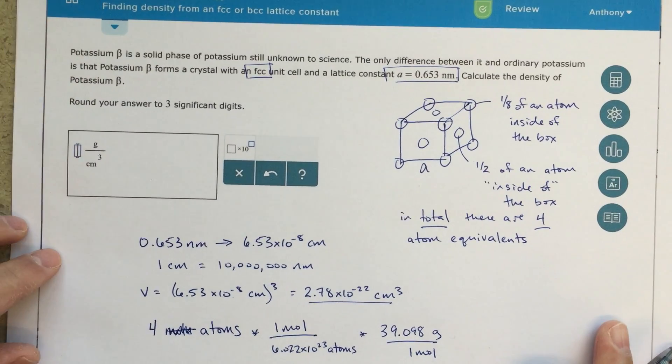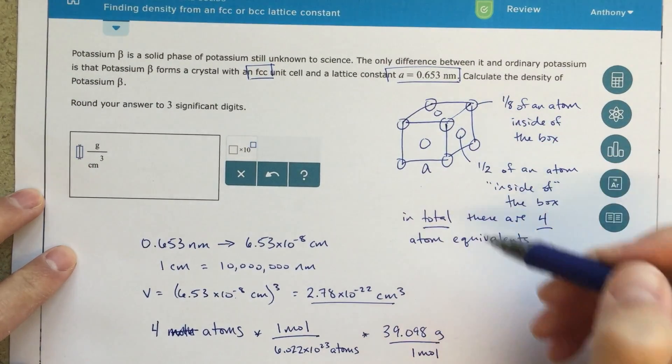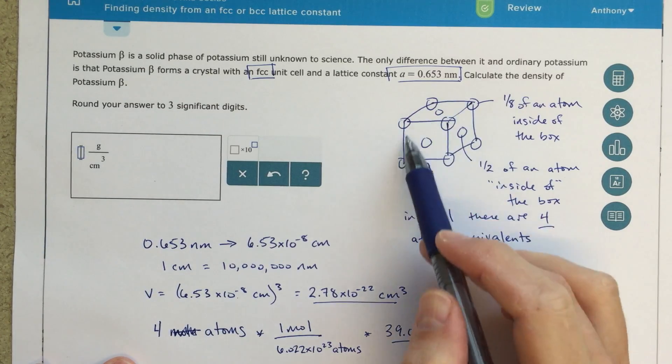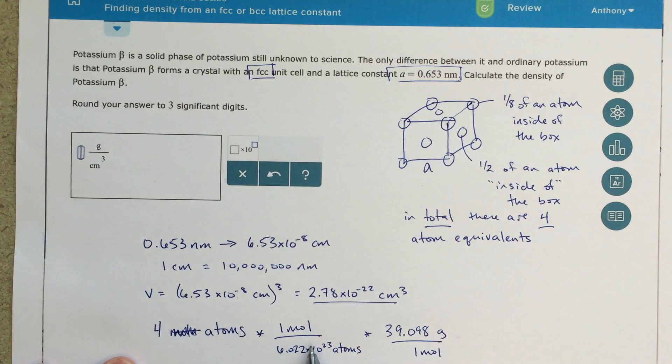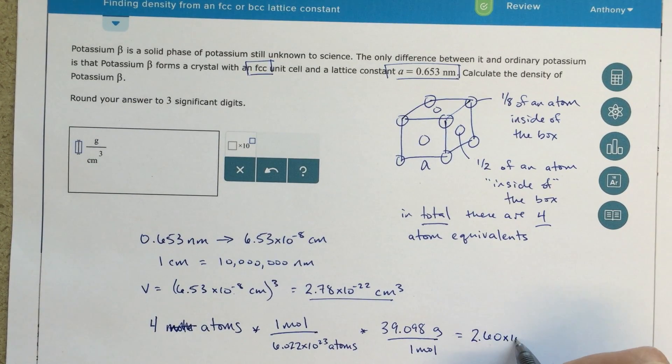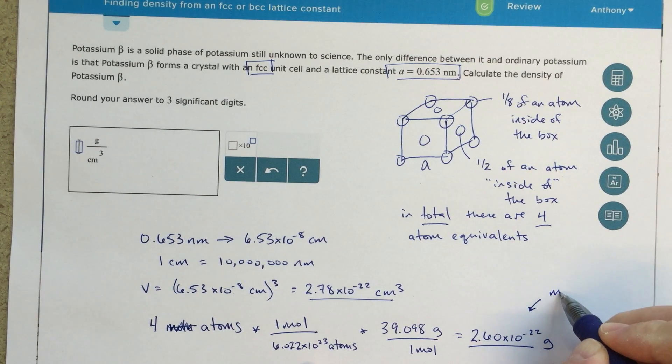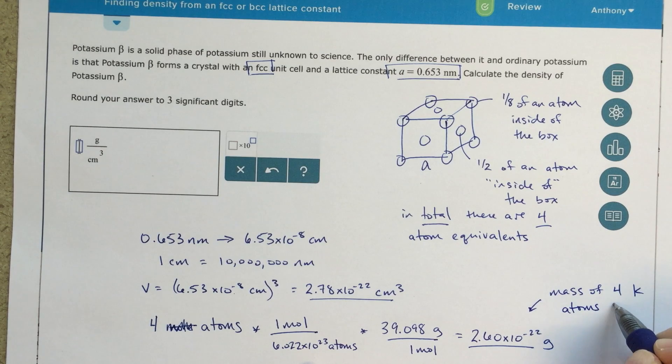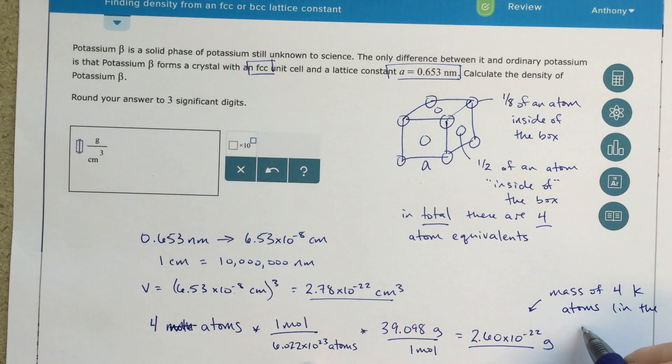Potassium is what is in this sample. I've got four atoms in my box. In this unit cell of four atoms, I can convert that to moles using Avogadro's number. Then I convert from moles into grams, and that equals 2.60 times 10 to the minus 22nd grams. This is the mass of four potassium atoms in the unit cell.